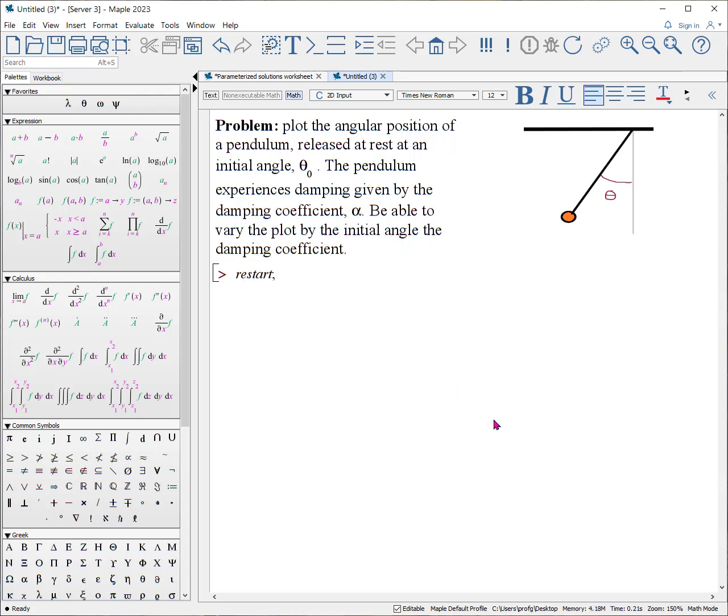We're going to release the pendulum at some initial angle at no speed. We also are going to include some resistance which is going to be proportional to the angular speed squared and we'll include a damping coefficient α. What we'd like to do is be able to plot this position as a function of time by varying the initial angle or the damping coefficient.